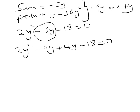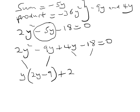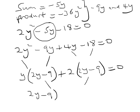We now factorize by pairing. We consider the first two terms. y is common in the first two terms: y open bracket 2y minus 9, close bracket. Plus, 2 is common in the last two terms: 2 open bracket 2y minus 9, close bracket, equals zero. Again, 2y minus 9 is common, so we write 2y minus 9 open bracket y plus 2, close bracket equals zero.